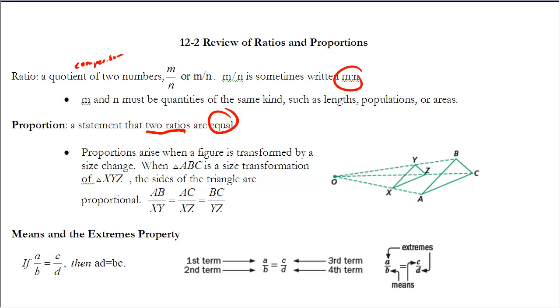So if we look at this situation, it says proportions arise when a figure is transformed by a size change. Anytime we do a size change we get proportions and we're going to need to use proportions quite a bit as we work with size changes. It says when triangle ABC is a size transformation of XYZ, the sides of the triangle are proportional. So if I look at AB compared to XY, those sides correspond with each other. The ratio between those corresponding sides are all equal. Any pair of these or any statement like this would represent a proportion. So anytime we're saying ratios are equal to each other, we have a proportion.